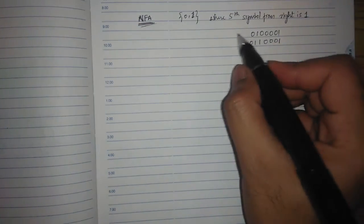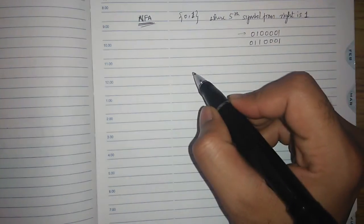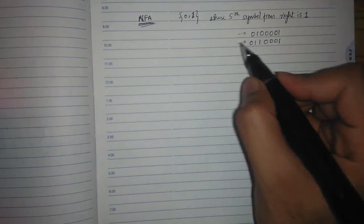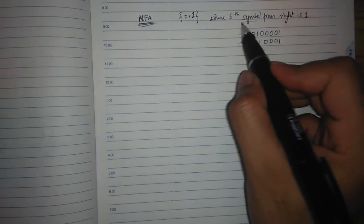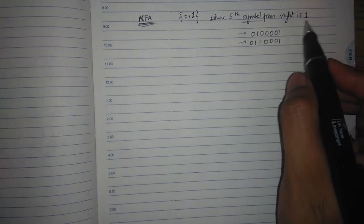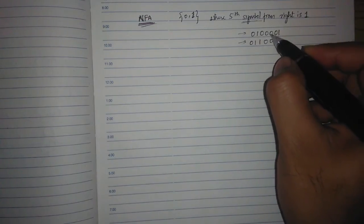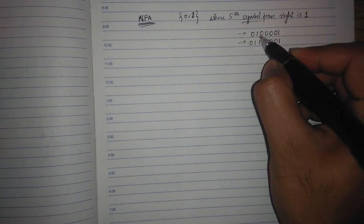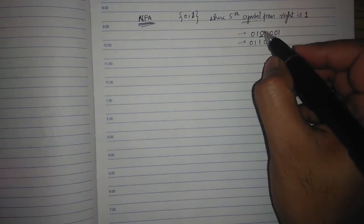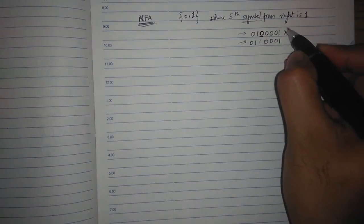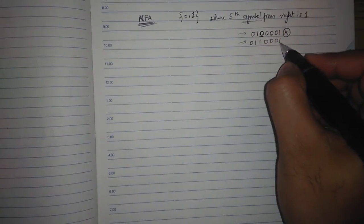This means you can have strings with zeros and ones where the fifth symbol from right is 1. So 1, 2, 3, 4, 5 - the fifth symbol from right should be 1. So this is 0, so this should not be accepted here.